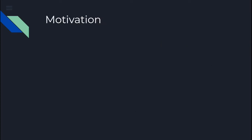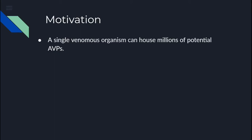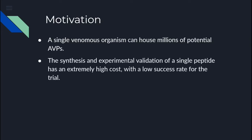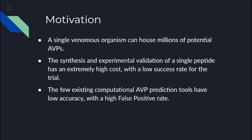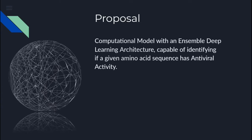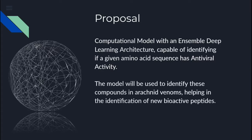Our motivations for this study are as follows: a single venomous organism can house millions of potential AVPs, especially in its venom and toxins. Since the mechanism of action of each bioactive peptide is extremely specific, we cannot apply a simple filter for selecting between them. Even after selecting a candidate, the synthesis and experimental validation of a single peptide has an extremely high cost with a low success rate. The few existing computational AVP prediction tools have low accuracy with a high false positive rate. In this project, we developed a computational model with an ensemble deep learning architecture capable of identifying if a given amino acid sequence has antiviral activity. The model will be utilized to identify these compounds in arachnid venoms, helping the identification of new bioactive peptides.